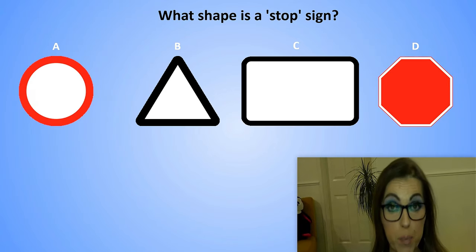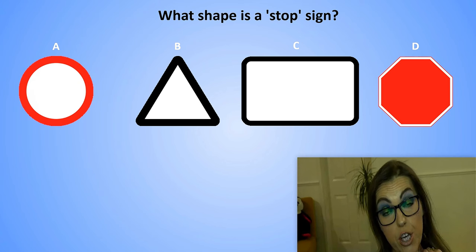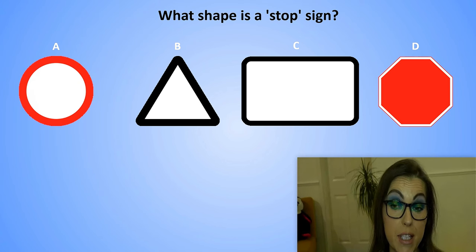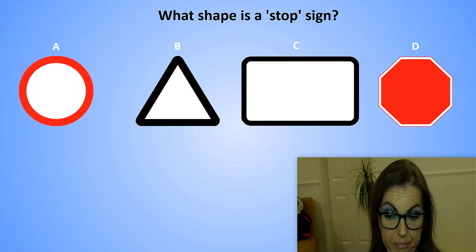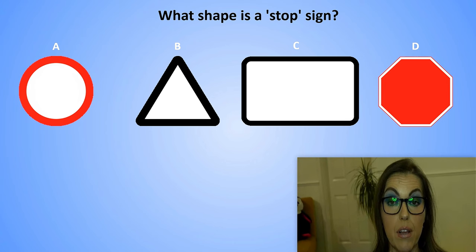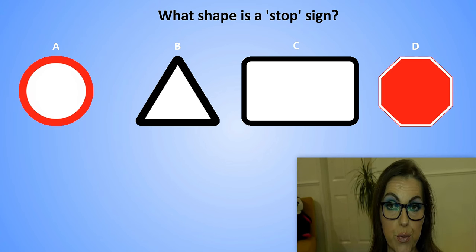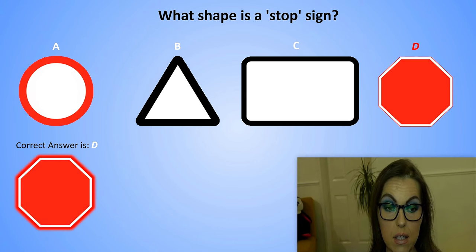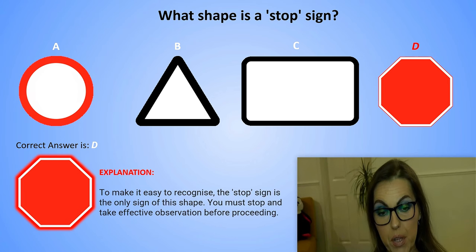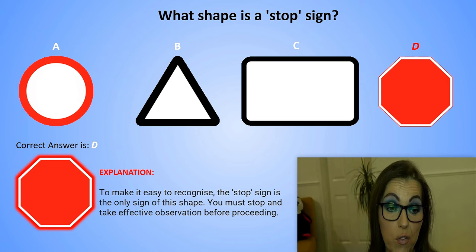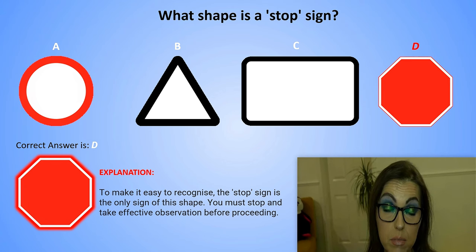What shape is a stop sign? The correct answer is the octagonal shape. Explanation: To make it easy to recognise, the stop sign is the only sign of this shape. You must stop and take effective observation before proceeding.